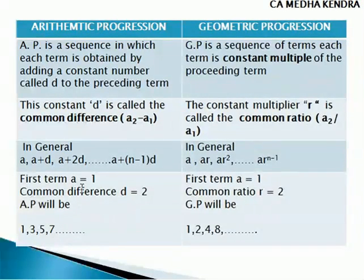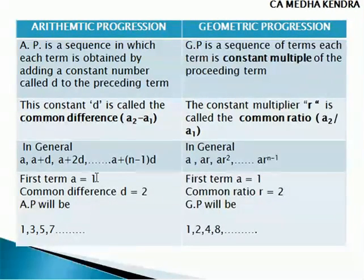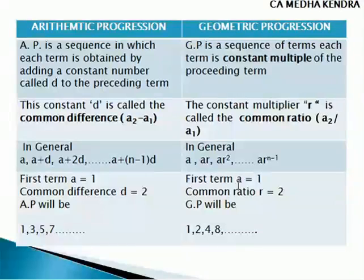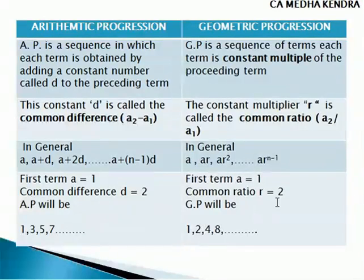For an arithmetic progression example, taking first term A equal to 1 and common difference D equal to 2: first term is 1, then 1 plus 2 gives 3, then 3 plus 2 gives 5, then 5 plus 2 gives 7, and so on. For geometric progression with A equal to 1 and common ratio R equal to 2: first term is 1, then 1 multiplied by 2 gives 2, then 2 multiplied by 2 gives 4, then 4 multiplied by 2 gives 8, and so on.